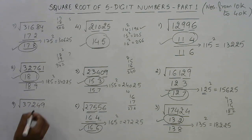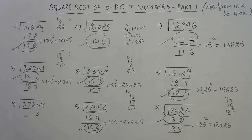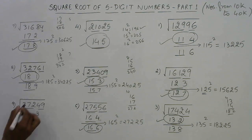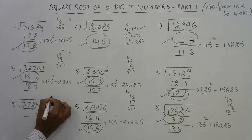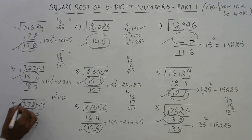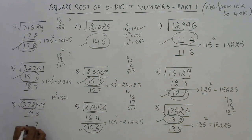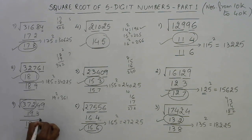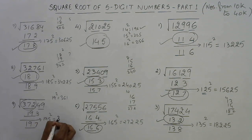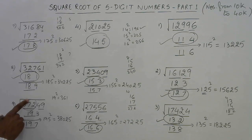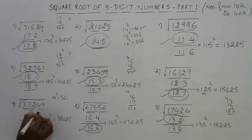The last one ends with 9, so the answer will end with either 3 or 7. The triplet is 372. 19 squared is 361, which is just below 372, so 19 is the remaining part. The answer is either 193 or 197. Take the intermediate number 195 squared. 19 into 20 is 380, followed by 25, giving 38025. The original number is smaller than 38025, so our answer has to be the smaller one — 193.